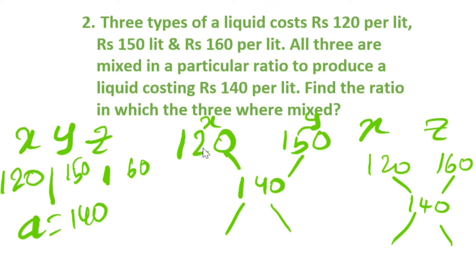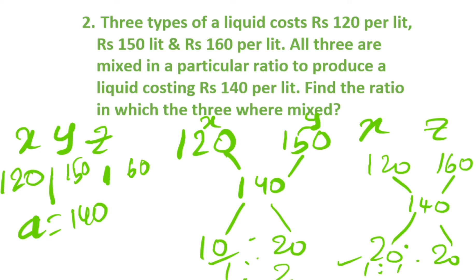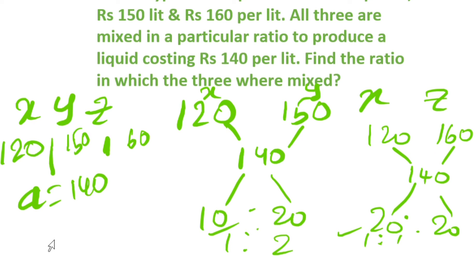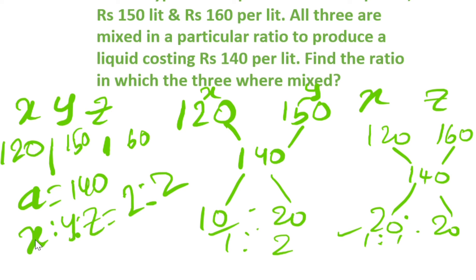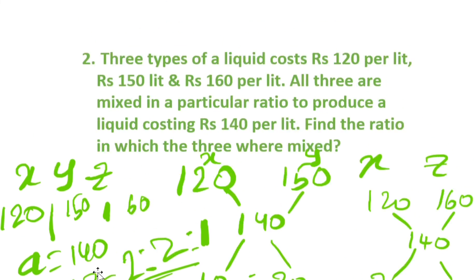From allegation 1: 150 minus 140 = 10, and 140 minus 120 = 20, giving ratio 10:20, simplified to 1:2. From allegation 2: 160 minus 140 = 20, and 140 minus 120 = 20, giving ratio 20:20, simplified to 1:1. Combining: for x, we add 1 + 1 = 2. y = 2, z = 1. So the required ratio is x:y:z = 2:2:1.